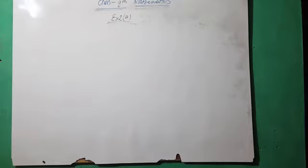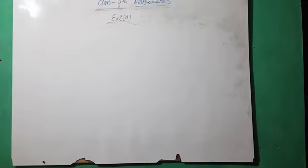In this lecture we will discuss question number three. In question number three you have to apply the a plus b plus c whole square formula: a square plus b square plus c square plus 2ab plus 2bc plus 2ca. But before applying this formula you have to remember the sign.